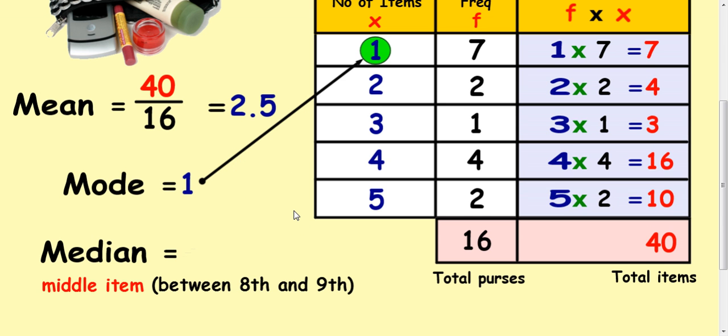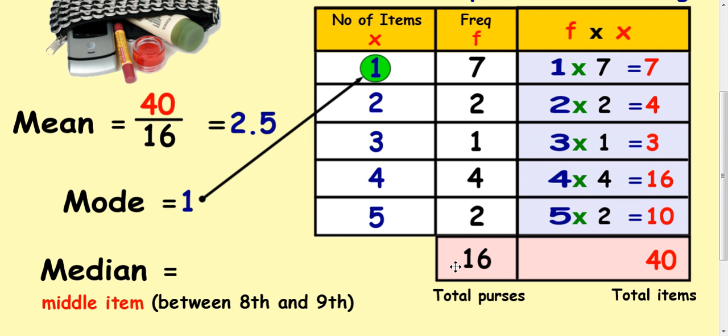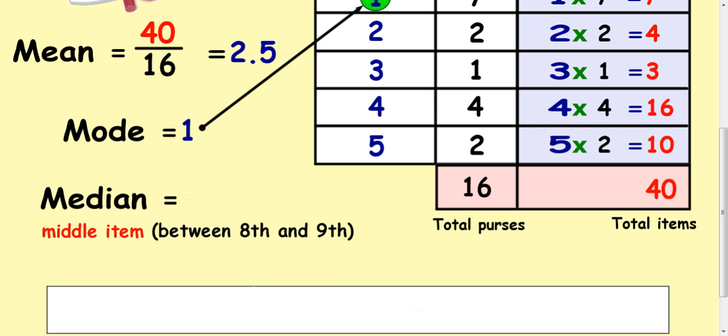Right the median. The median is the middle item. So the item in the middle of sixteen purses. Now the middle item, that's an even number of numbers. So it would be eight either side. So it's really between the eighth and the ninth item. Now between the eighth and the ninth item, from the seventh items a one. Because there's going to be seven people with one item in the handbag. So that means the eighth person, if you like, has got two items. And the ninth person has got two items. So the median is between two and two. So that just must be two.